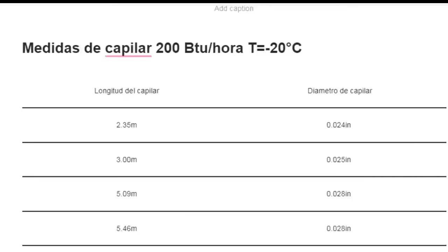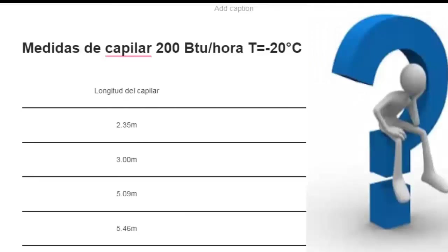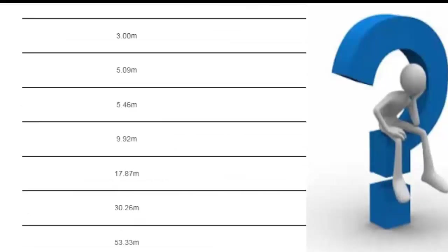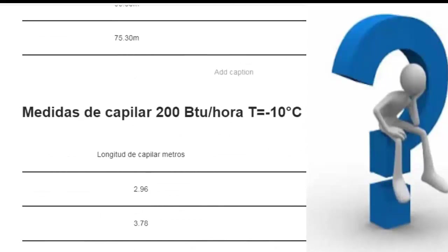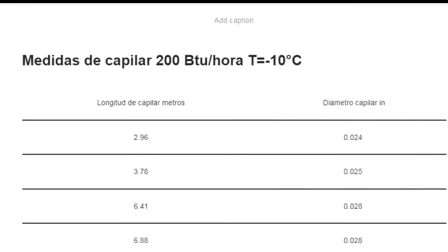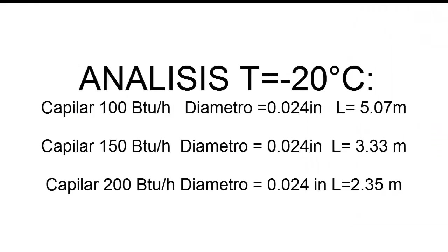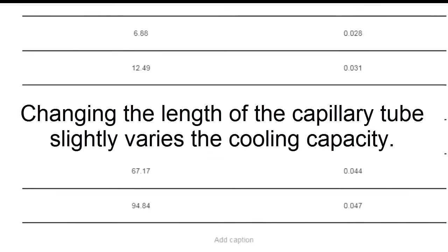As a first conclusion, we can say that the change in capillary length is very useful to calibrate the evaporator temperature at any value. In addition, changing the length of the capillary can serve to slightly change the cooling capacity, but in small variations — as in the case of the examples, where the increase was only 50 BTU.